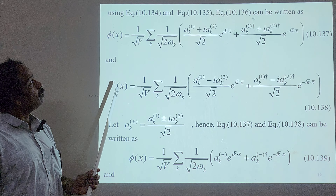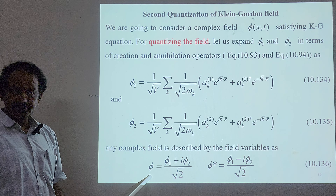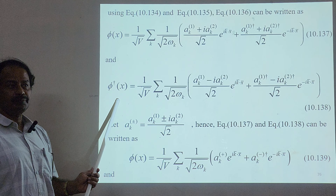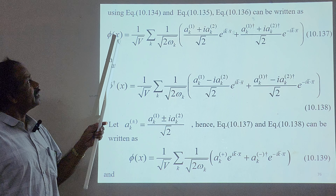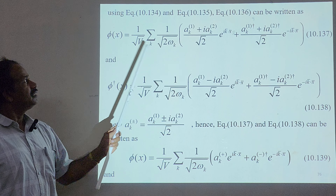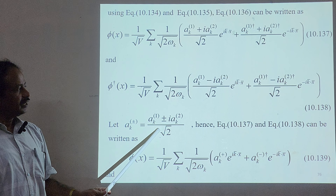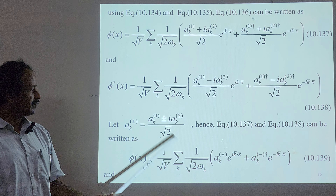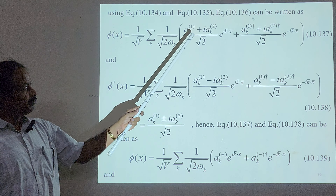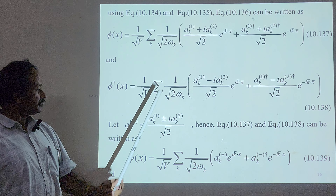Using equation 10.134, we substitute for phi₁ and phi₂ to get expressions for phi and phi†. Since phi* involves operators, it becomes phi†. Using equations 10.134 and 10.135, equation 10.136 can be written accordingly, and phi† similarly as equation 10.138. We then define ak± = (ak1 ± i·ak2)/√2. Wherever we find plus we substitute ak+, and wherever we find minus we substitute ak−.